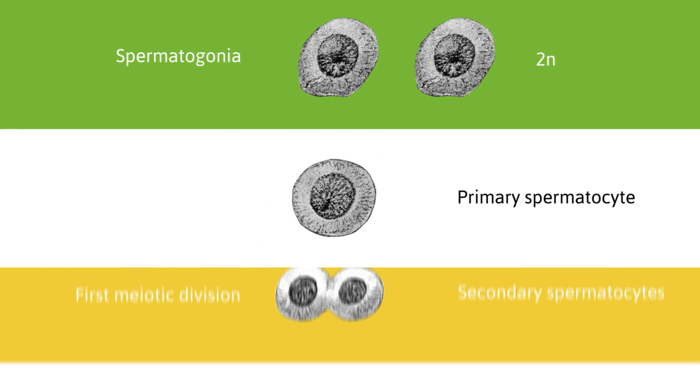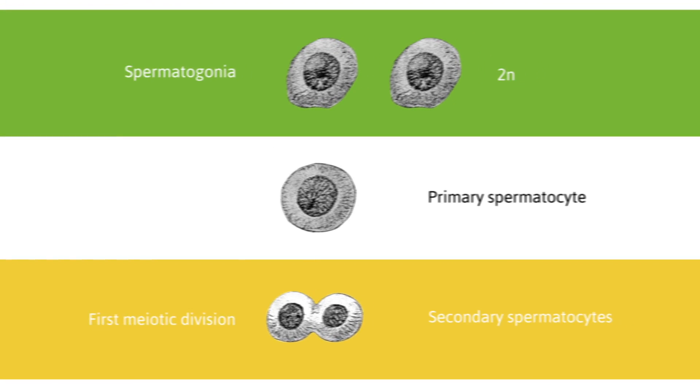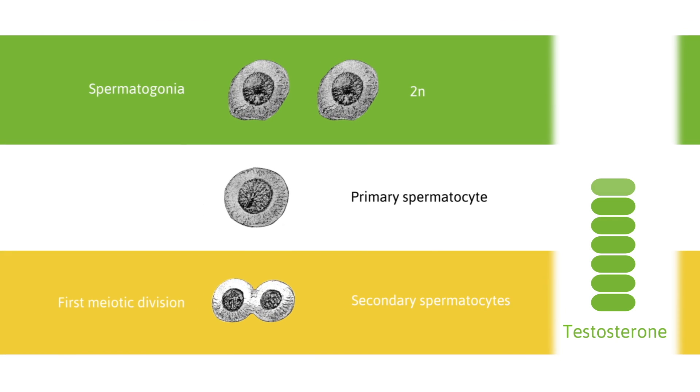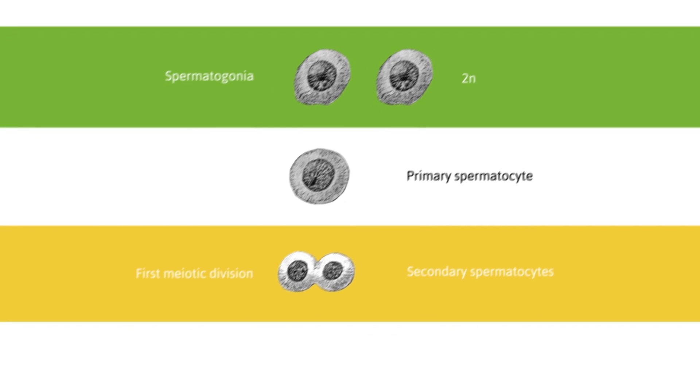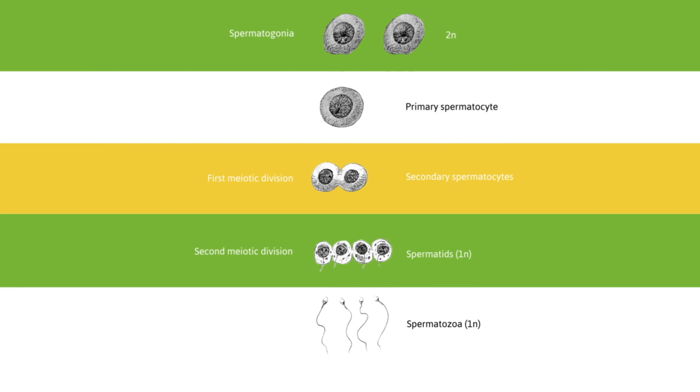Primary spermatocytes divide by meiosis to form secondary spermatocytes. Testosterone levels rise at puberty, and the high levels of testosterone induce the germ cell division and sperm production. The secondary spermatocytes divide again to form spermatids, and at the end spermatids differentiate into sperm cells.